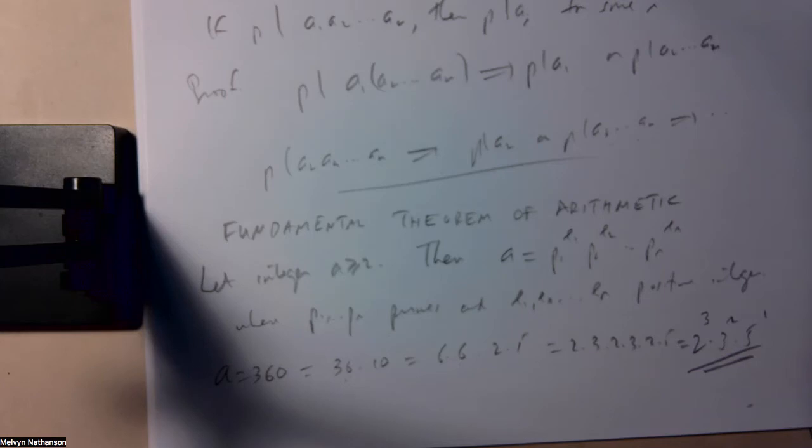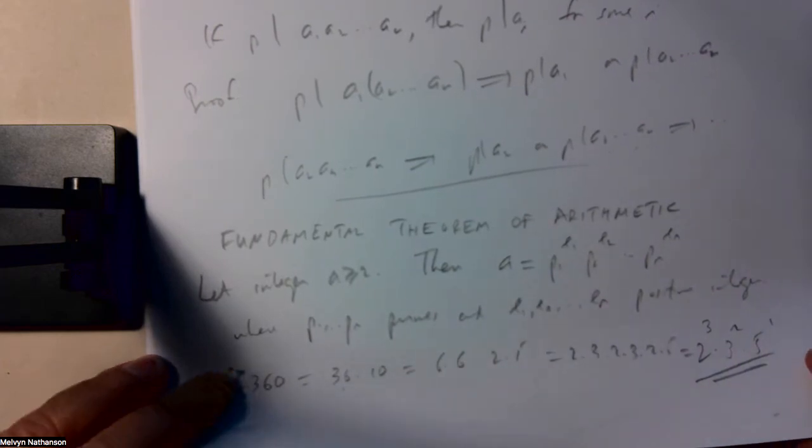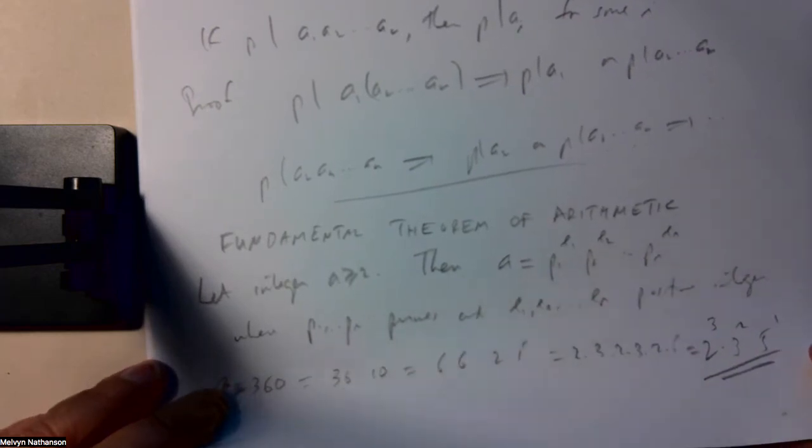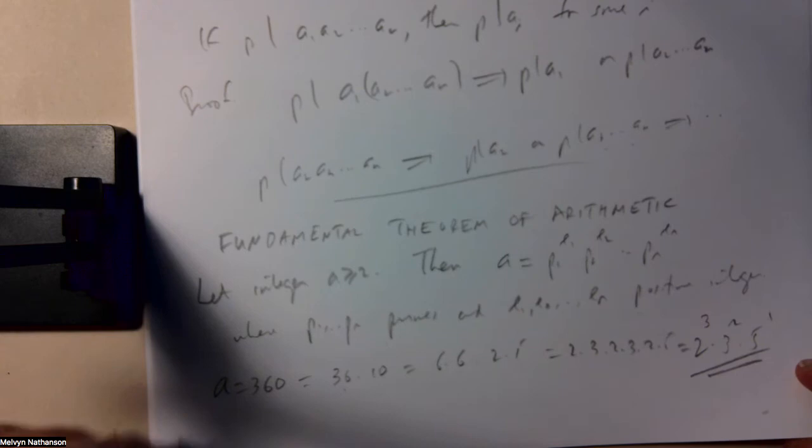Any integer that you write down can be factored into a product of primes. Now, your computer, for example, if you learn to use Maple, Maple has a command, ifactor, which will factor an integer with maybe up to 10 or 12 or 15 digits. It's very quick. If you take a really big integer, an integer with 100,000 digits, computer's not going to be able to factor it. This is a very unusual, especially simple point.